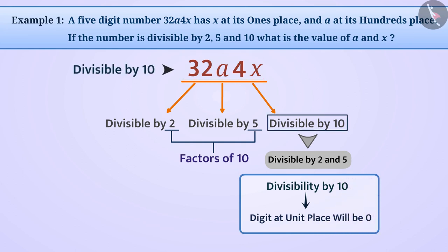The given number will be divisible by ten only if the digit at the ones place, that is x, is zero. Thus we have found the value of x. Now can you find the value of a? Try it.